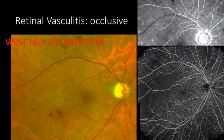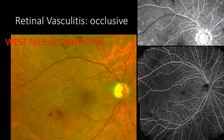The other thing you must explore when you see a patient with vasculitis is the grade of perfusion, because some vasculitis can be occlusive. So all patients with vasculitis must undergo fluorescent angiography or ICG to understand the degree of non-perfusion, and this is a case of West Nile retinopathy.